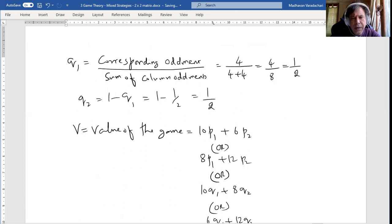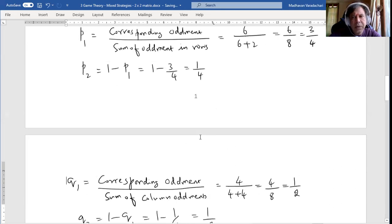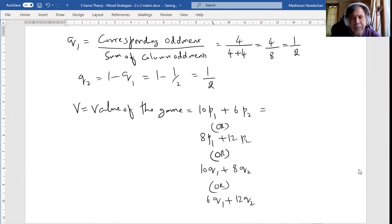Now let us use each of these to check whether everything is giving you the same result. 10 P1 - P1 is 3 by 4. So 10 times 3 by 4 plus 6 times 1 by 4 which is 30 plus 6 by 4 which becomes 9. Let us try this: 8 times 3 by 4 plus 12 times 1 by 4 which is 24 plus 12 by 4 which is also giving you 9.